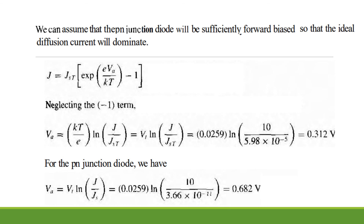Substituting the values for the Schottky diode, we get the answer as VA = 0.312 V. For the P-N junction diode, the forward voltage VA equals VT · ln(J / JS), and substituting the value of JS we get the answer as 0.682 V.